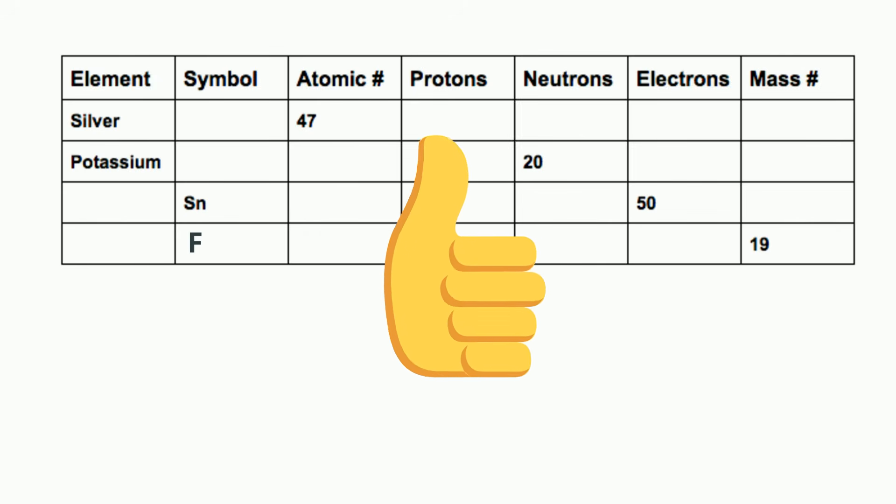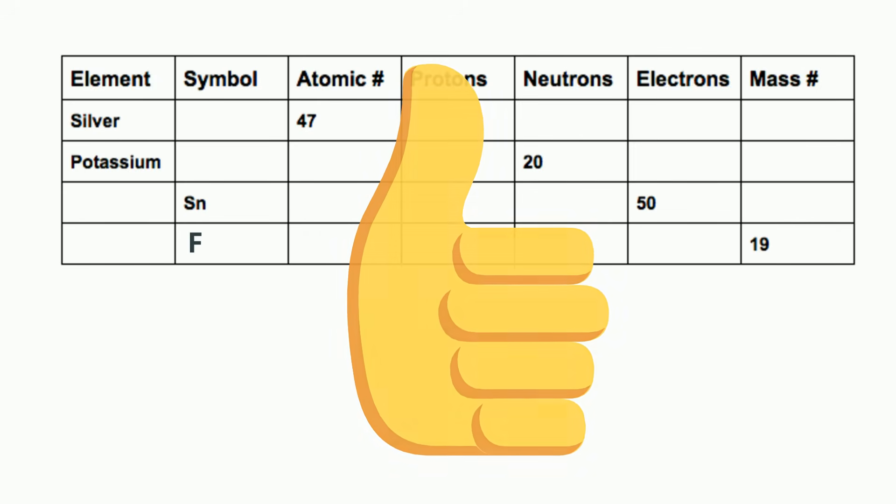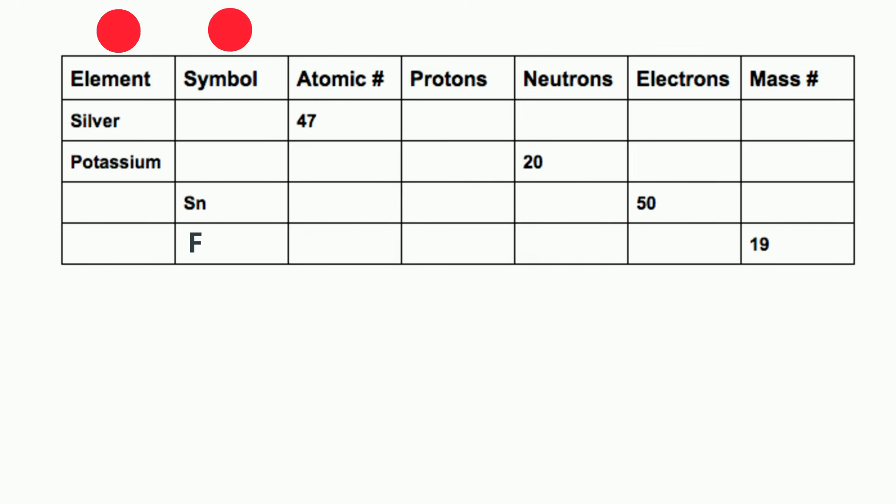So, let's get started. Up first we are going to find the element, the symbol, the atomic number, the number of protons, neutrons, electrons, and the mass number.